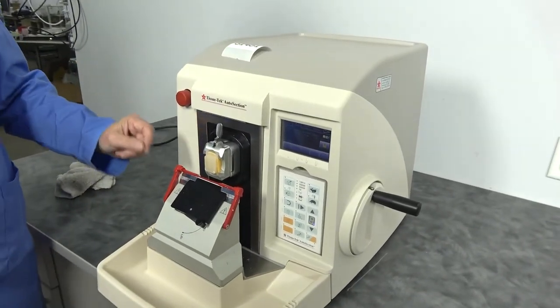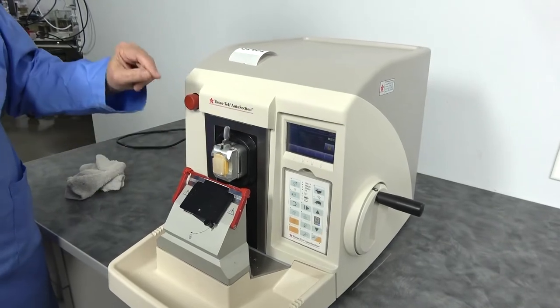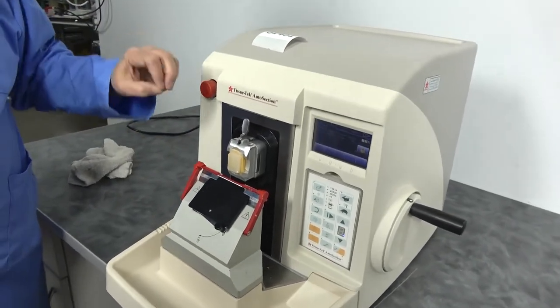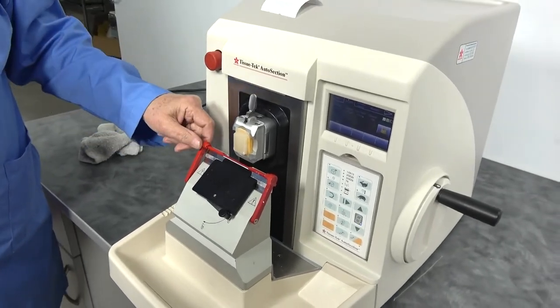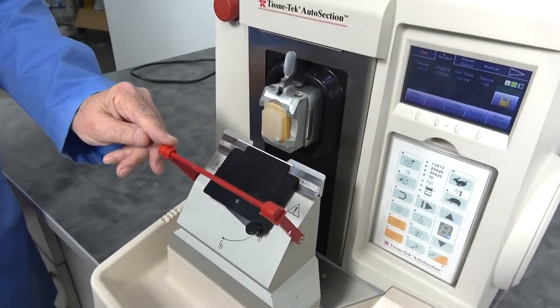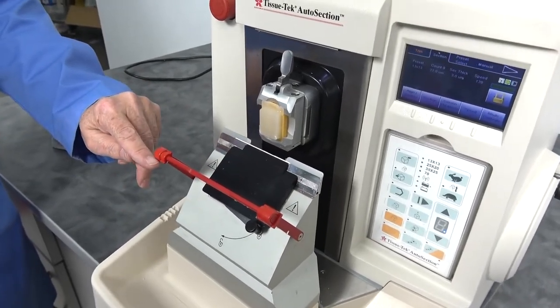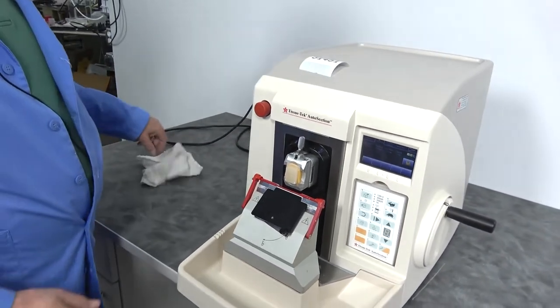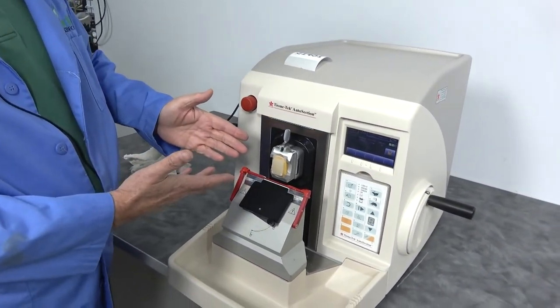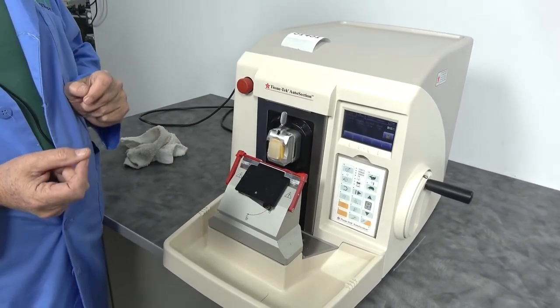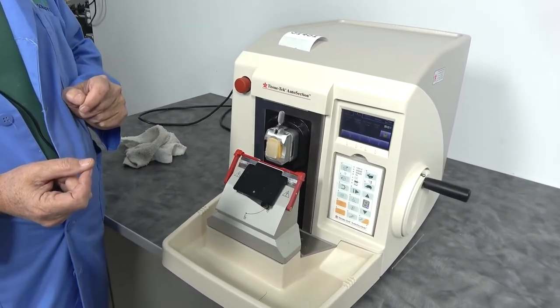Some of the nice features that we've seen is that you can go from mounting your block to sectioning in just moments. It is designed, we do have a blade in there, it is designed so it can be cut with the safety bar up so that you can be collecting your samples, your sections, with the bar in place to ensure that you don't get cut.